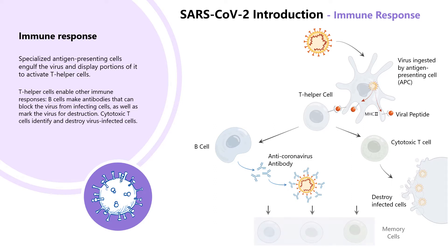Some activated B and T cells are stored as memory cells. Memory cells can stay in the body for months, even years, to provide immunity.